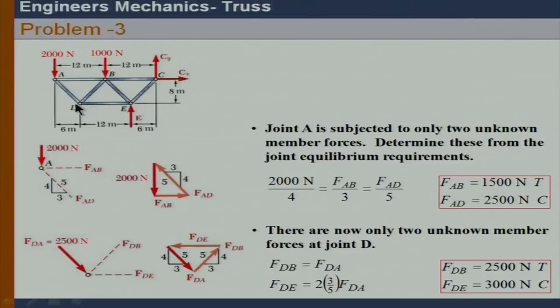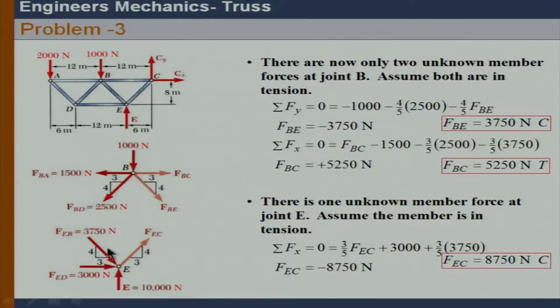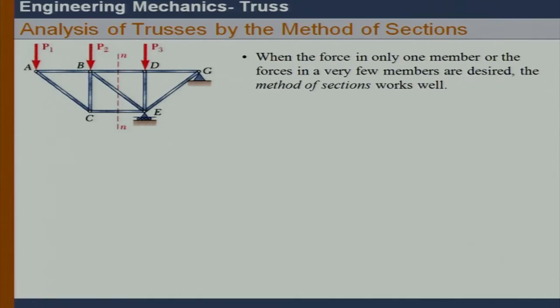Once FAB and FAD are found, we go to joint D and solve for DB and DE, then look at joint B to find FBE and FBC, then come to joint E to find FEC. The nature of forces at the joint is reversed as per Newton's third law. When carrying forward the compressive force, it is taken inward to the joint, so it is considered positive in the equation. This completes the method of joints analysis.